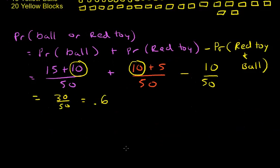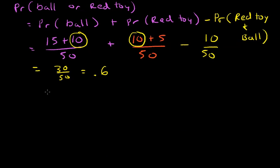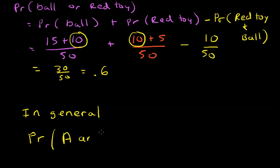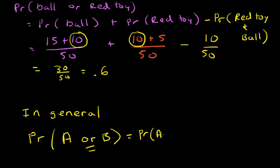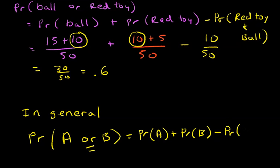In general, this is the addition rule. We kind of built up to it in those examples. The probability of A or B equals the probability of A plus the probability of B. But you have to be careful — if there is a probability of being both A and B, you have to subtract that off. So: P(A or B) = P(A) + P(B) − P(A and B).